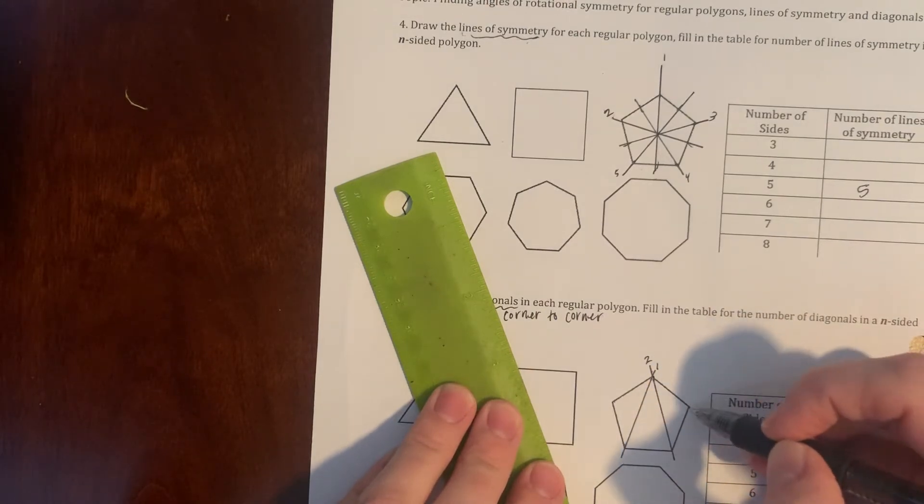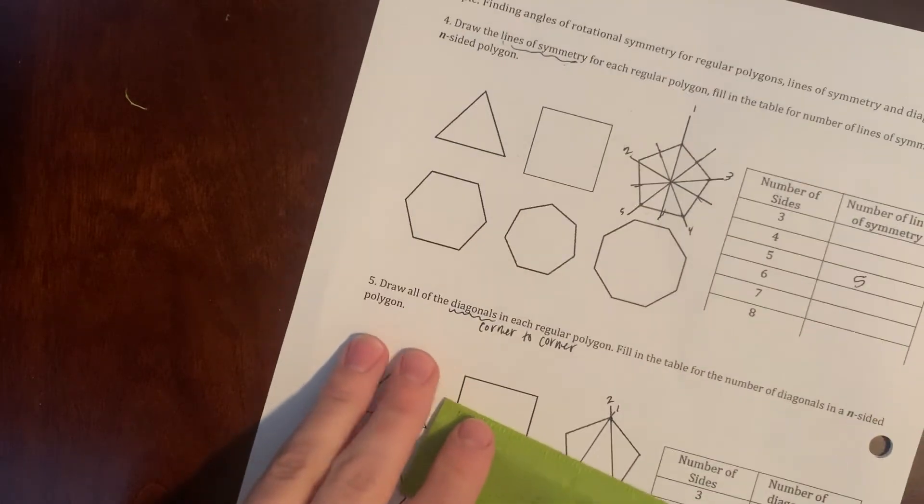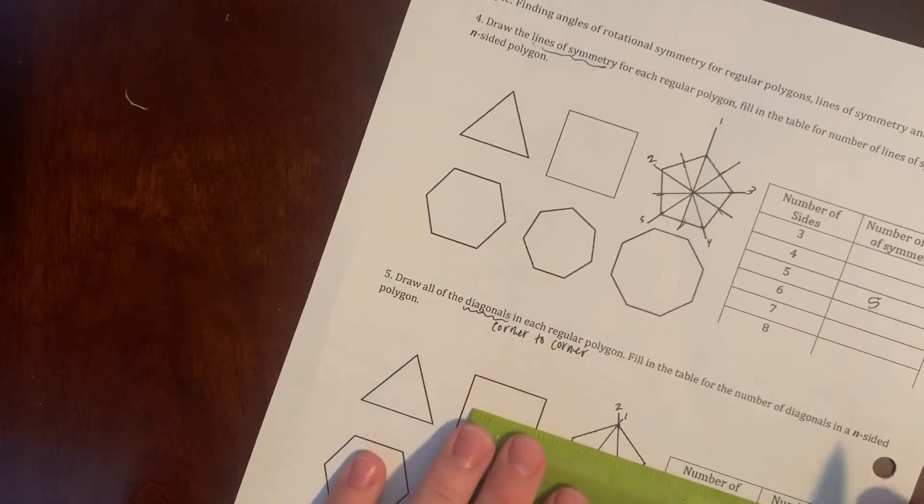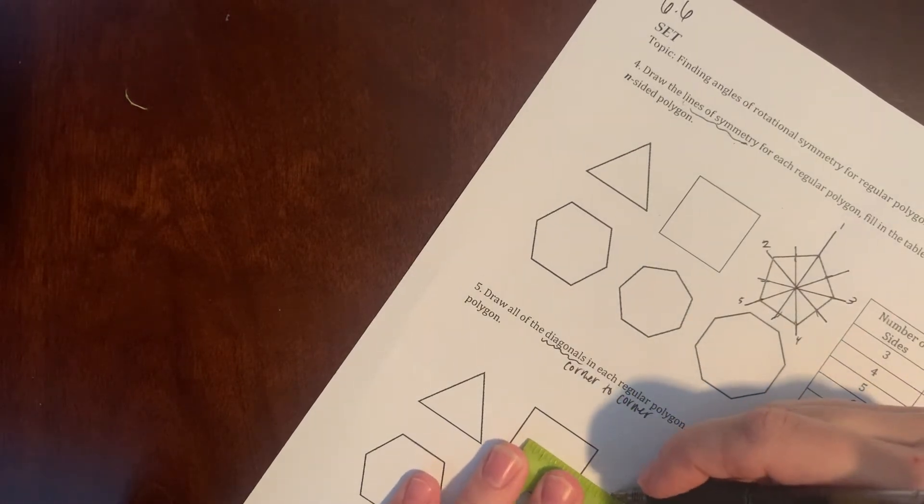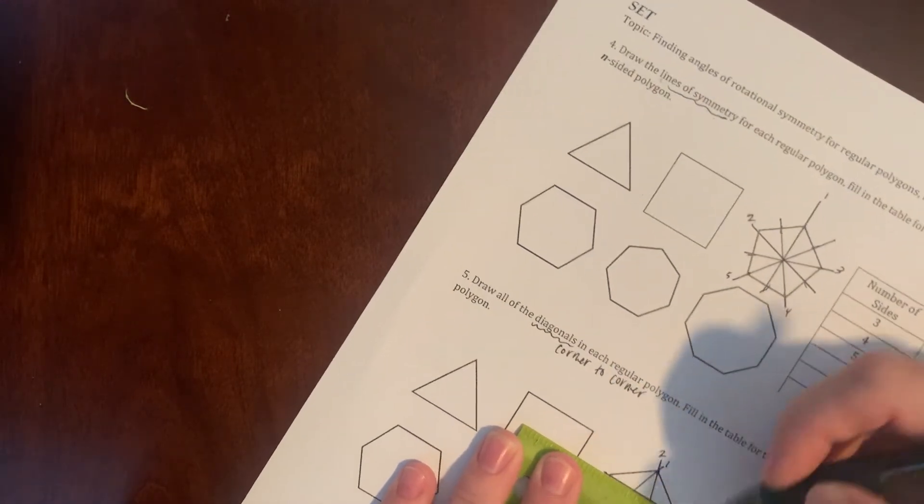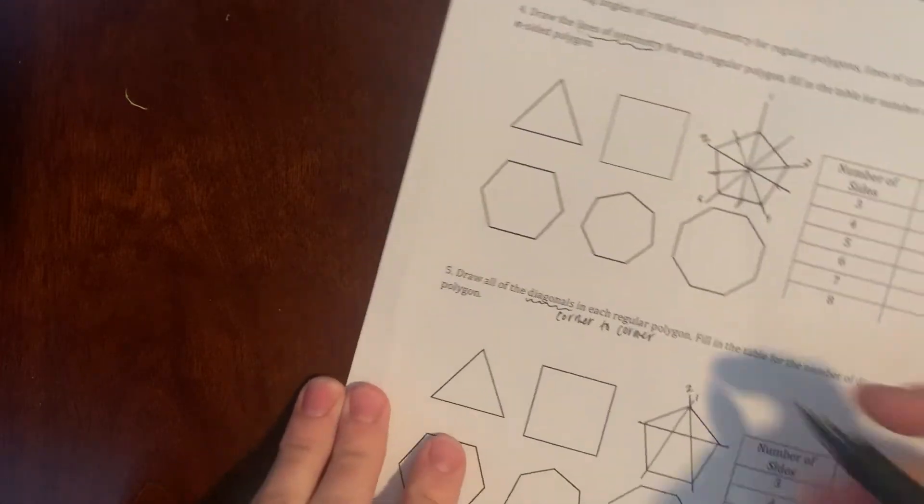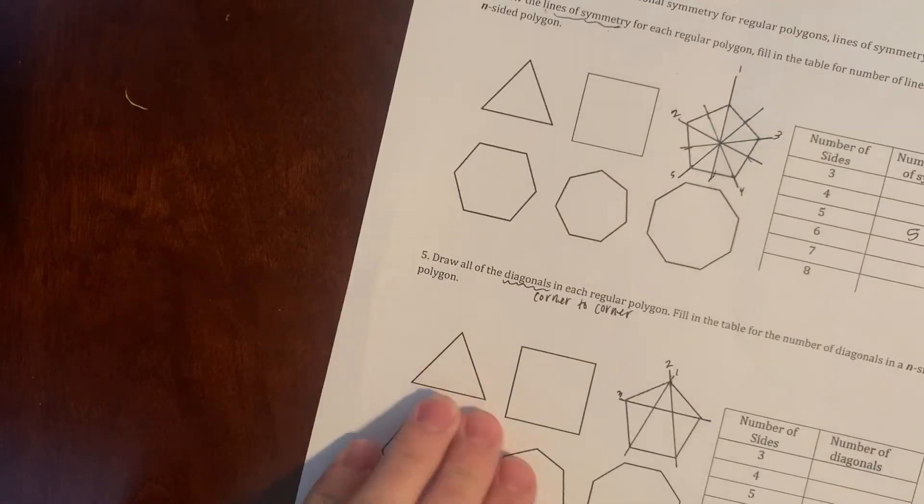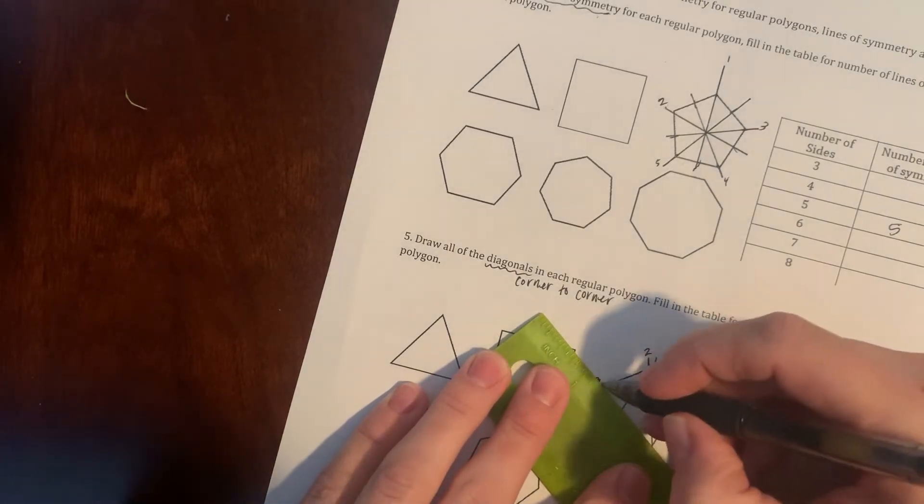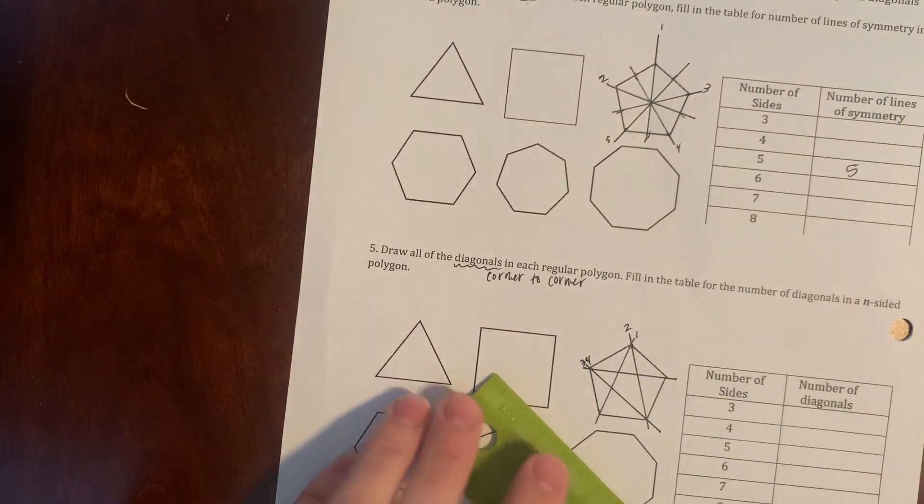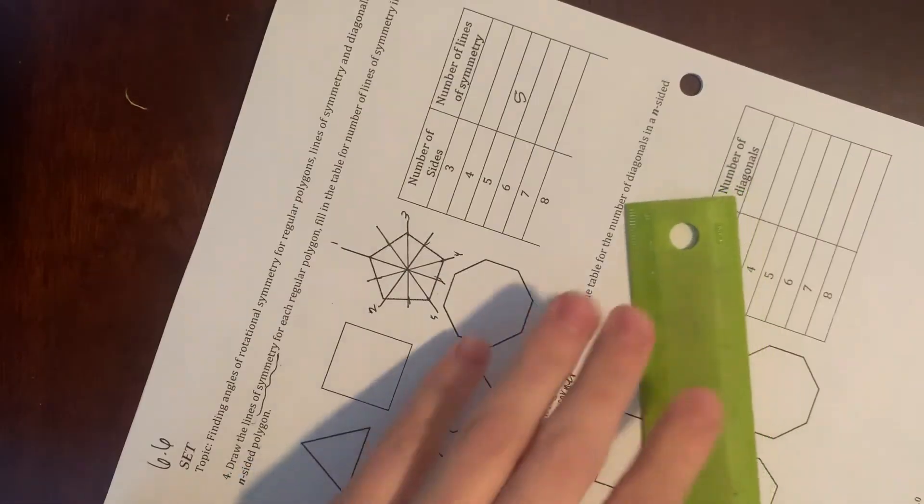So now I'm going to keep going all the way around. So from there to there, notice again it's not a line of symmetry. We're just connecting the corners. That's what a diagonal is. So here to here, that's four, and then I'm just going to keep going.